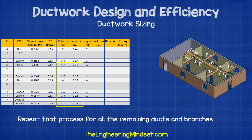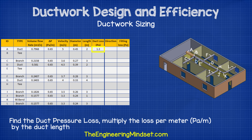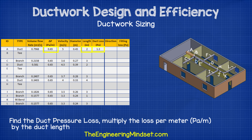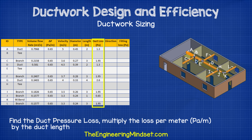Now find the total duct losses for each of the ducts and branches. It's very easy and simple to do — just multiply the duct length by the pressure drop per meter of 0.65 pascals per meter. Do that for all the ducts and branches on the table.